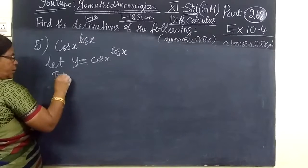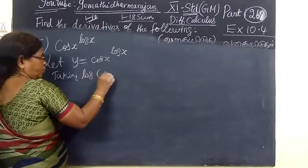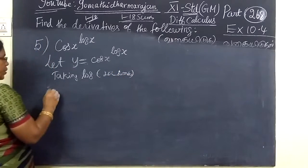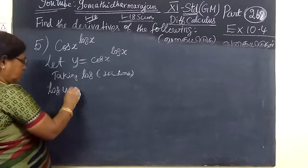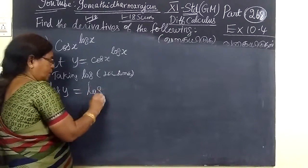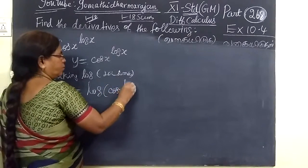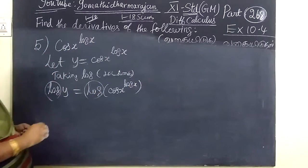So, taking log on both sides. Then we get log Y equals log of cos to the power log x. Log here, very simple. Here you are writing.